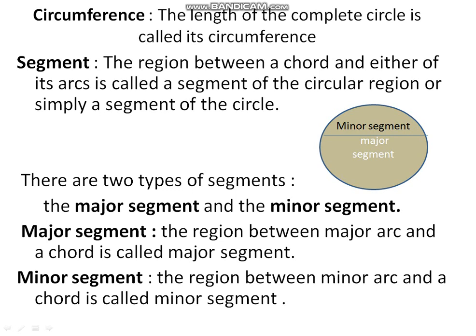Next is the segment. The region between a chord and either of its arcs is called the segment of the circular region, or segment of the circle. There are two segments: the major segment and the minor segment. The region between the major arc and the chord is called the major segment.